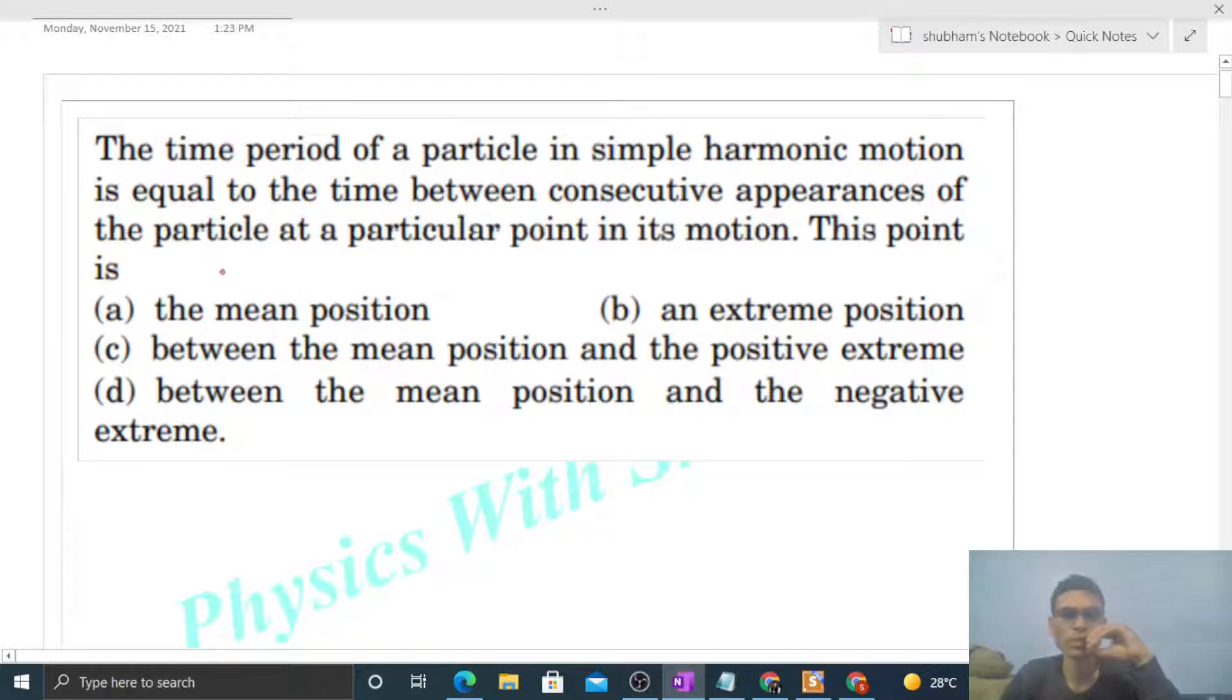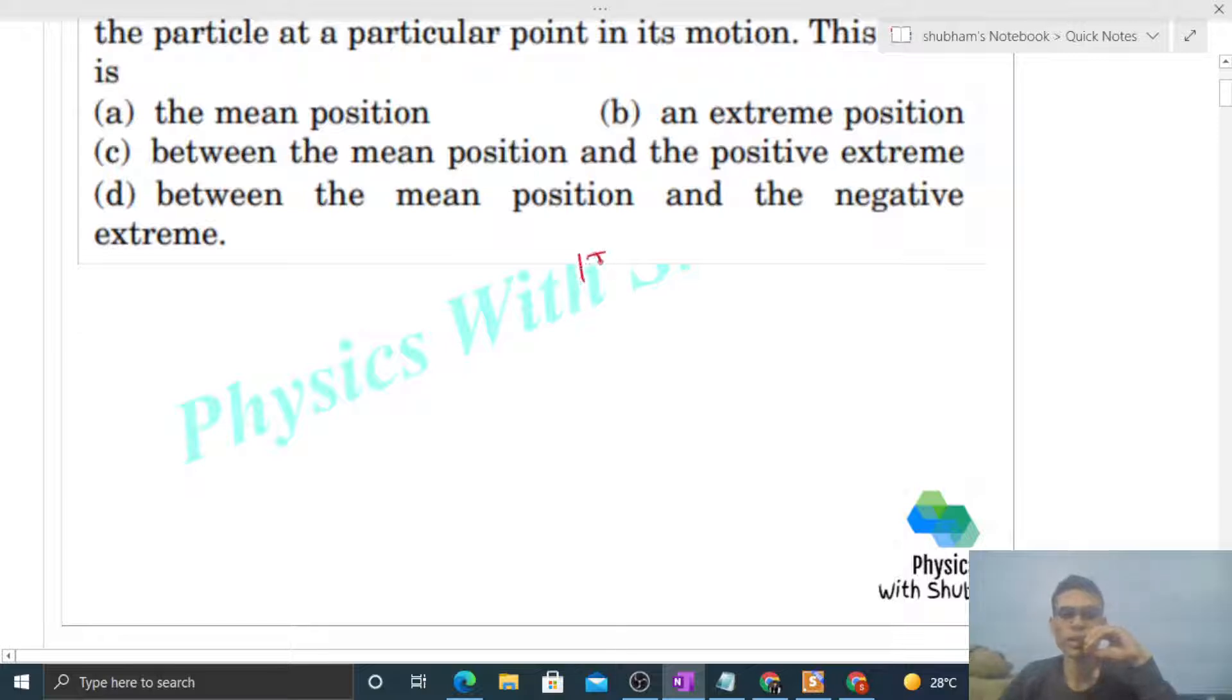This point is fine. So in SHM, one time period means when one oscillation is complete, right? So check whether in consecutive appearances one oscillation completes or not. Let's say we have the mean position here, extreme one here, and extreme two on the other side.